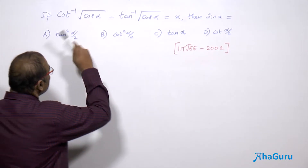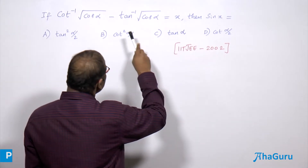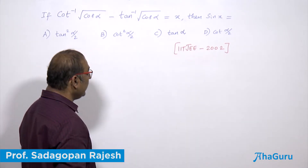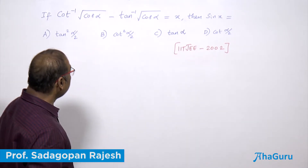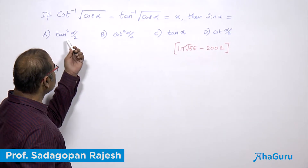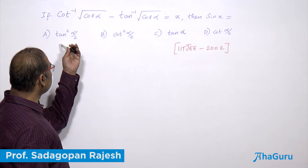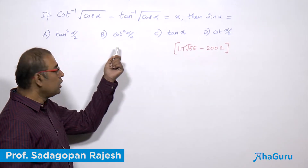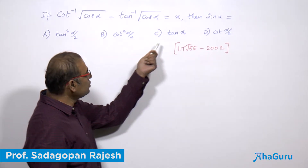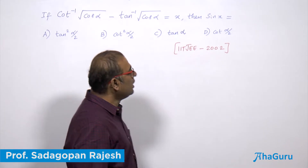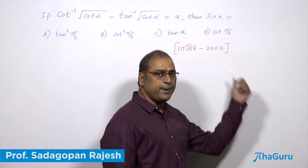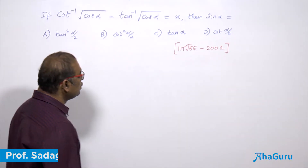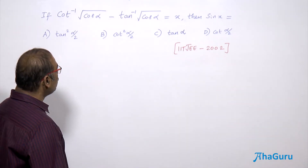If cot⁻¹(√cosα) - tan⁻¹(√cosα) = x, then sin x is equal to — options are tan²(α/2), cot²(α/2), tan α, and cot(α/2). This problem is from IIT JEE 2002.